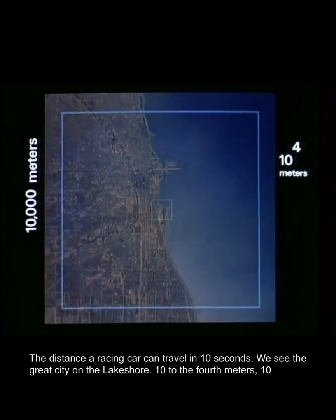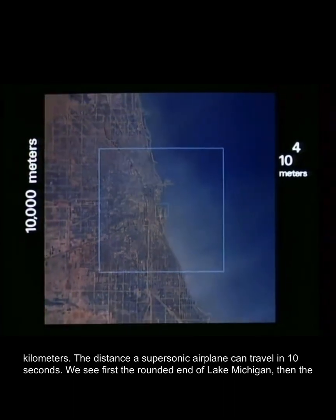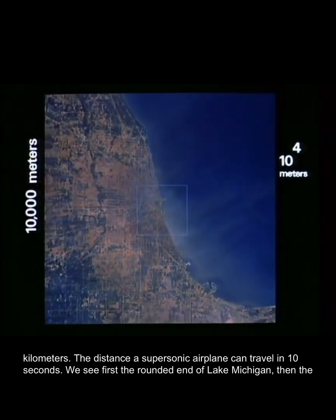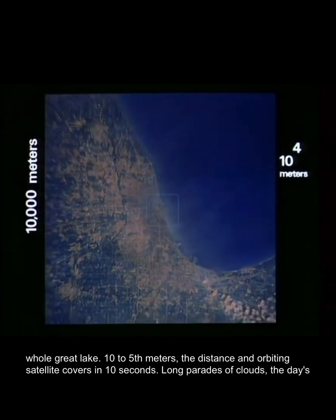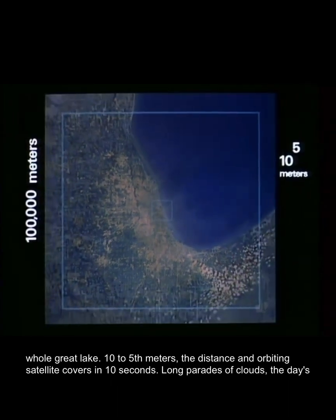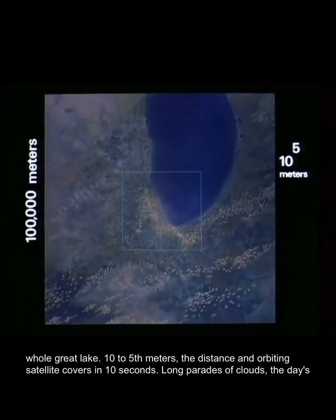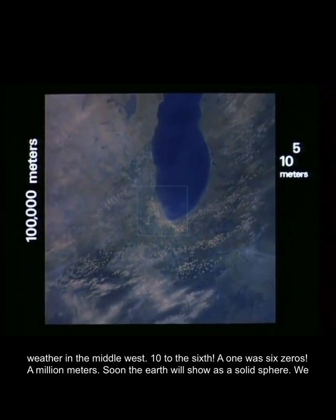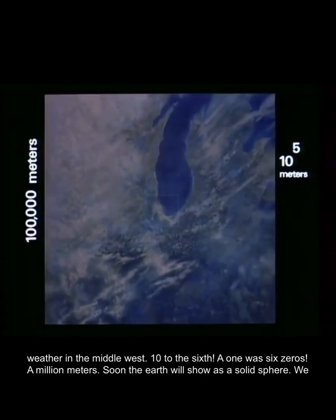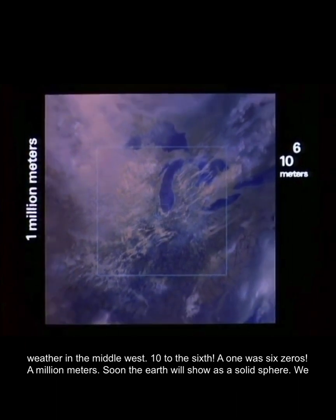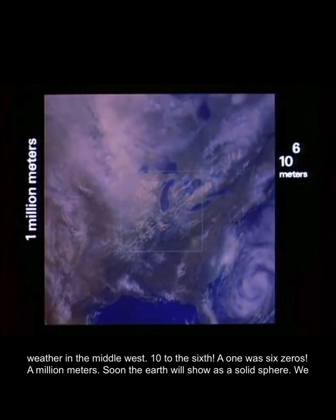10 to the 4th meters, 10 kilometers, the distance a supersonic airplane can travel in 10 seconds. We see first the rounded end of Lake Michigan, then the whole great lake. 10 to the 5th meters, the distance an orbiting satellite covers in 10 seconds. Long parades of clouds, the day's weather in the Midwest. 10 to the 6th, a one with six zeros, a million meters. Soon the Earth will show as a solid sphere.